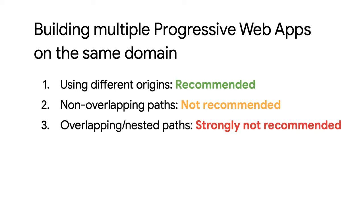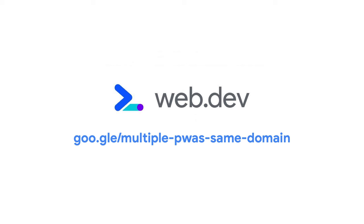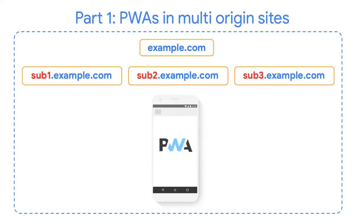Here is the final list of ways of building multiple PWAs on the same domain. You can read more about this topic in our companion article on web.dev by following the link. And in case you haven't, don't forget to check out the first video of this series, PWAs in Multi-Origin Sites, where we explore the opposite case of trying to build a single progressive web app that encompasses different origins like subdomains. I hope you have enjoyed this talk — thanks for watching.